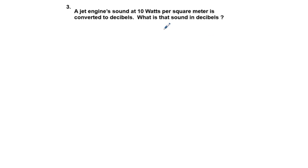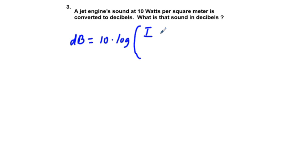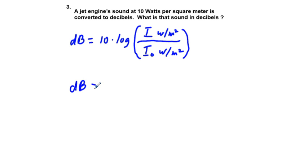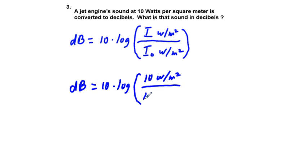Problem 3: a jet engine sound at 10 watts per square meter is converted to decibels. What is that sound in decibels? Very similar to problem 1. We use the formula: decibels equals 10 times the common logarithm of the sound intensity over the threshold of hearing. So we have 10 times the common logarithm of 10 watts per meter squared over 1 times 10 to the negative 12 watts per meter squared.